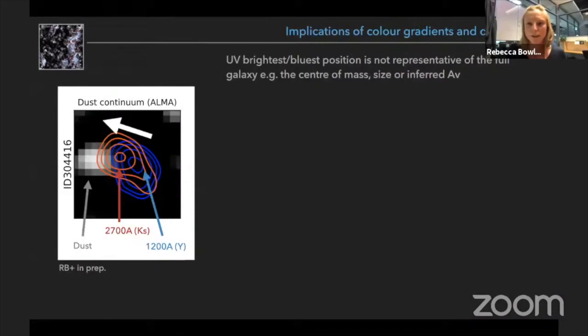So what are the implications of this color gradient that we observe and the dust offsets we see relative to the centroid of the UV emission? Well this is telling us that the brightest and bluest position in the ultraviolet is not representative of the full galaxy.